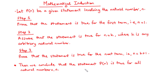We can then conclude that the statement p(n) is true for all natural numbers. You should understand that the set of natural numbers is equal to the set of positive integers. Natural numbers are counting numbers starting from 1, 2, 3, and so on through to positive infinity. So if you hear 'positive integers' instead of 'natural numbers,' they refer to the same thing.